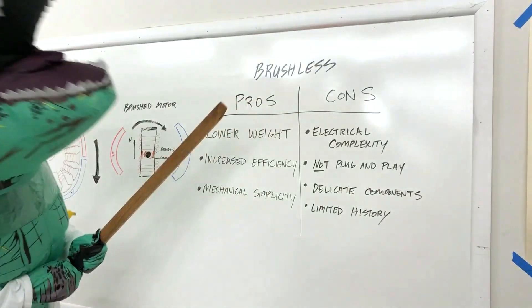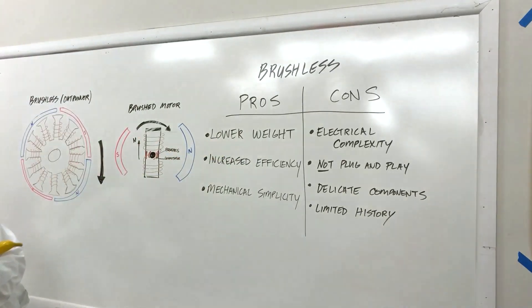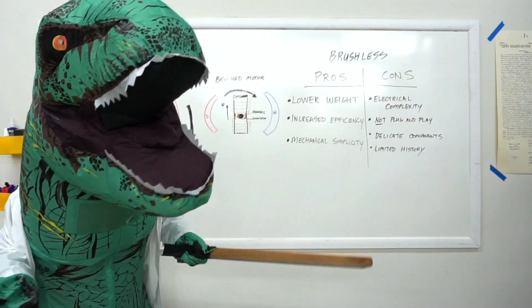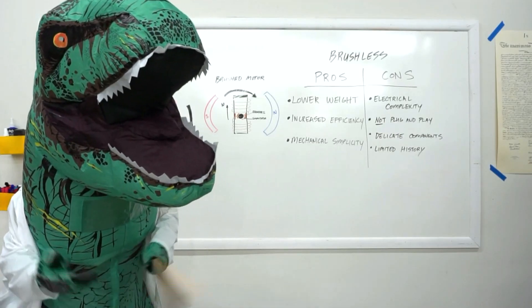Brushless motors are lower weight for a given power and more efficient than a brushed motor. A brushless motor has more power than the same sized brushed motor, meaning faster robots and harder hitting weapons.